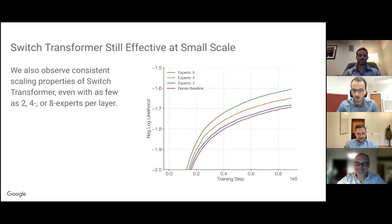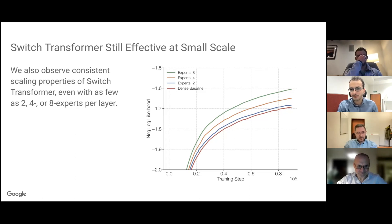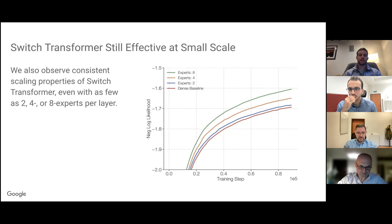Follow-up discussion: If you can distill the sparse model on the language modeling objective rather than directly on a task, would that be worthwhile? Yes — we did distillation on both SuperGLUE and the pre-training objective and found it effective. It still seems to work when training the dense model to convergence to make for a fair comparison. Barrett also notes that you can use experts on a single core for fine-tuning even without splitting across multiple cores.